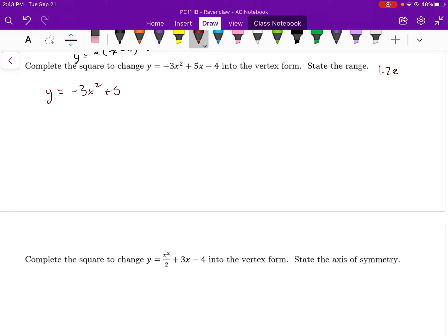So if I begin my function, y is equal to negative 3x squared plus 5x minus 4. And this differs because now my coefficient in front is negative, but my reasoning shouldn't change.